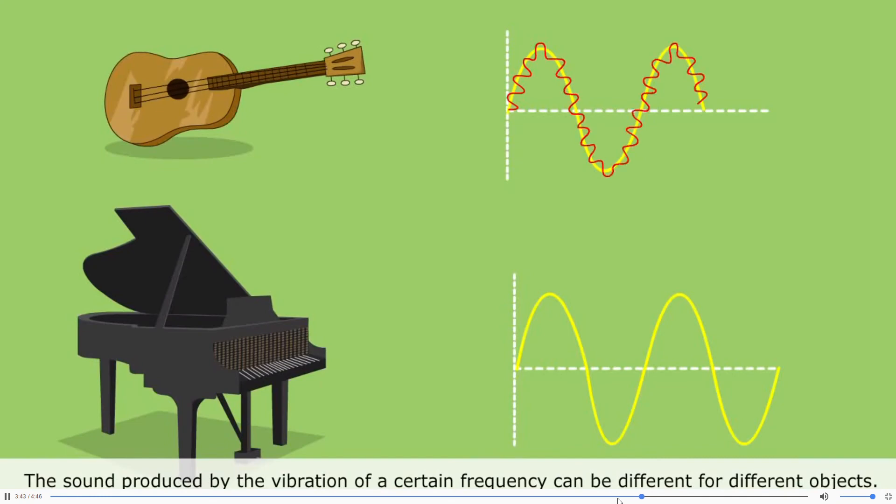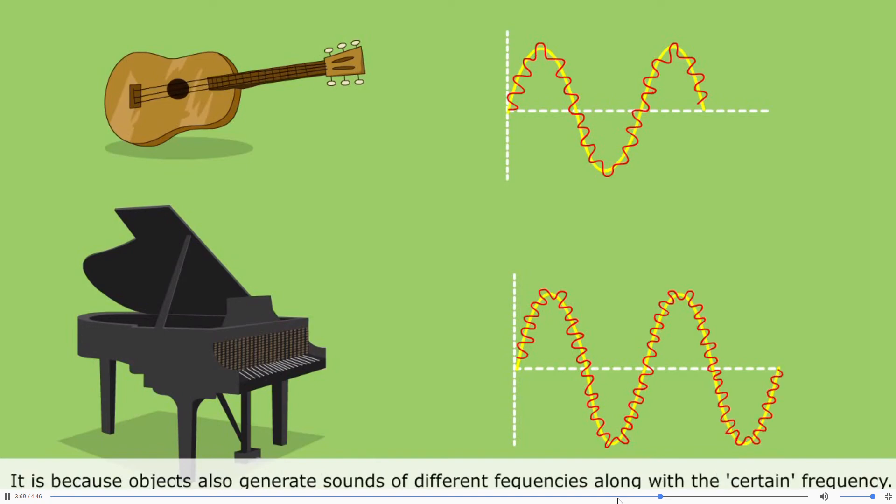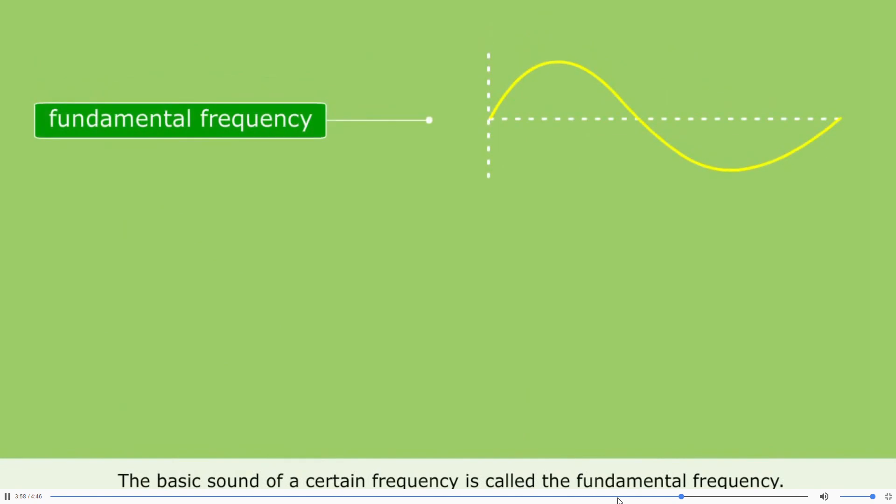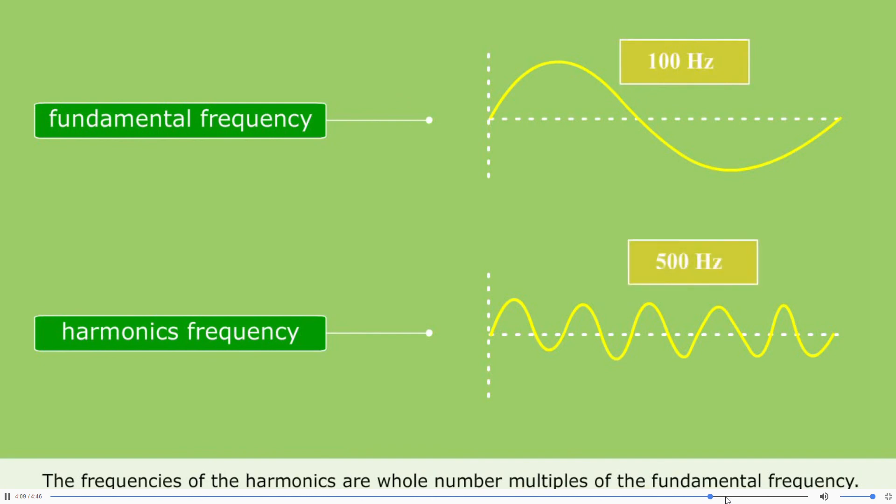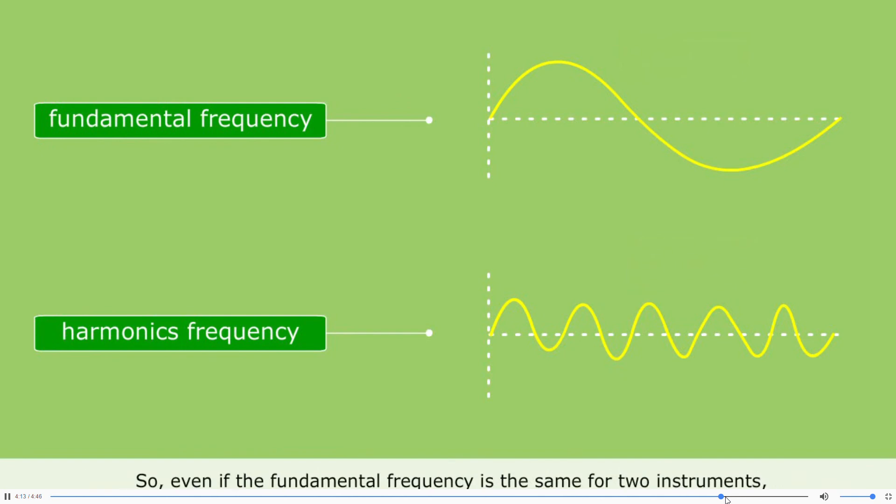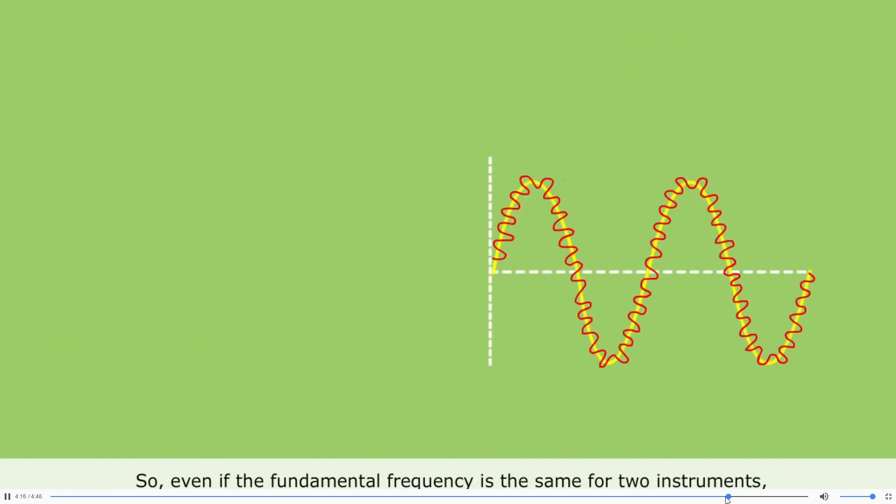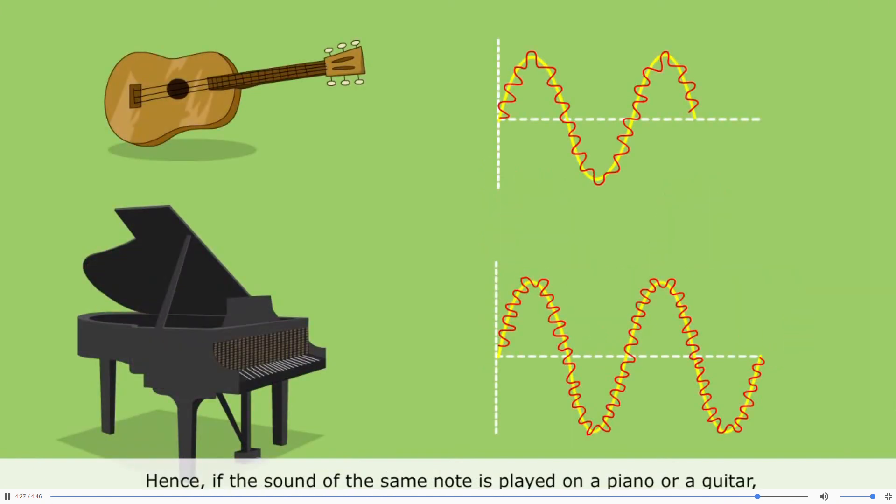The sound produced by the vibration of a certain frequency can be different for different objects. It is because objects also generate sounds of different frequencies along with a certain frequency. The basic sound of a certain frequency is called the fundamental frequency. The other frequencies are called the harmonics. The frequencies of the harmonics are whole number multiples of the fundamental frequency. So, even if the fundamental frequency is the same for two instruments, the harmonics will be different. And hence the quality of the sound will be different. Hence, if the sound of the same note is played on a piano or a guitar, the sound produced will be different because of the differences in the harmonics.